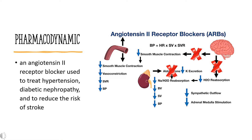During sympathetic stimulation or when renal blood pressure or blood flow is reduced, renin is released from granular cells of the juxtaglomerular apparatus in the kidneys. Renin cleaves circulating angiotensinogen to angiotensin I, which is cleaved by angiotensin converting enzyme, ACE, to angiotensin II. Angiotensin II increases blood pressure by increasing total peripheral resistance, increasing sodium and water reabsorption in the kidneys via aldosterone secretion, and altering cardiovascular structure.